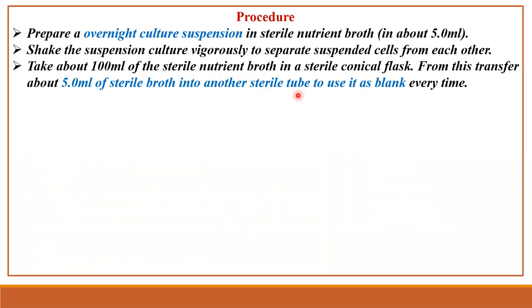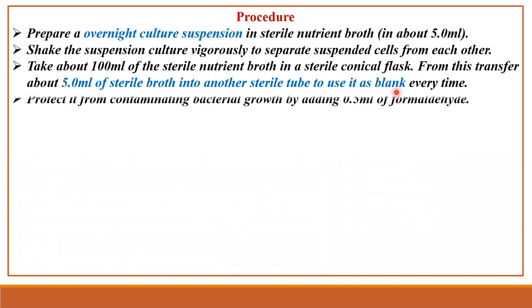This 5 ml tube is labeled as blank. To this blank, 0.5 ml of formaldehyde solution is added to prevent contaminating bacterial growth. So the blank solution consists of 5 ml of nutrient broth with 0.5 ml of formaldehyde, and this will be used as the blank solution throughout the experiment.